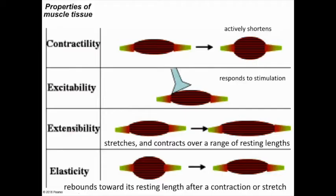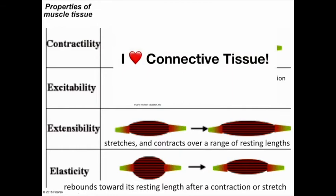The last two properties also relate to the core property of contractility. Extensibility is the fact that muscle cells can be stretched and then contract over a range of lengths. Elasticity is the ability to rebound to its original length after being stretched or contracted, due to intrinsic properties of the muscle cell itself and of the surrounding connective tissue layers associated with the muscle tissue.